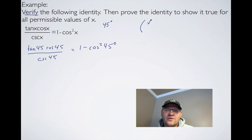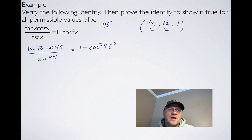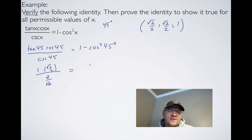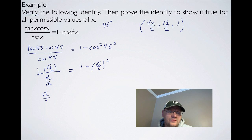From the unit circle, at 45 degrees, the coordinates are root 2 over 2, root 2 over 2, and 1. So tan of 45 is 1, cosine of 45 is root 2 over 2, and cosecant of 45 is the reciprocal of sin 45, which is 2 over root 2. On the left side, we get root 2 over 2 divided by 2 over root 2 — dividing by a fraction, we multiply by the reciprocal — giving us 2 over 4, which is 1/2.